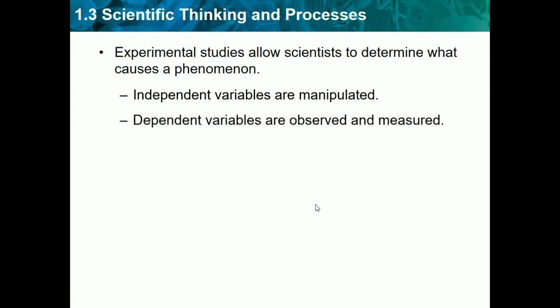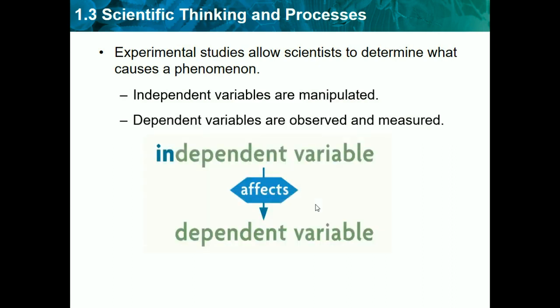There are two variables we need to really understand in the parts of an experiment. The first is an independent variable — these are what you manipulate. Next we have the dependent variable, which is what is measured. Another name for the independent variable is the test variable, and another name for the dependent variable is the outcome variable. The independent variable affects the dependent variable, so the dependent variable is dependent on what the independent variable is.